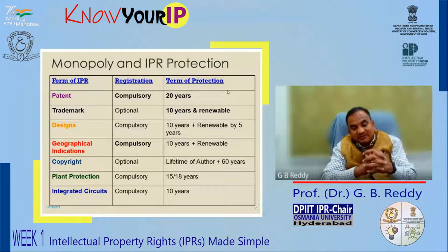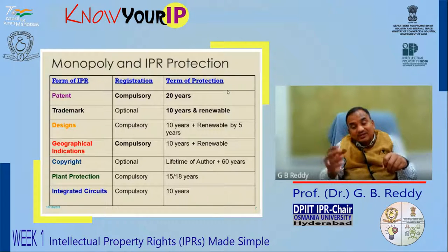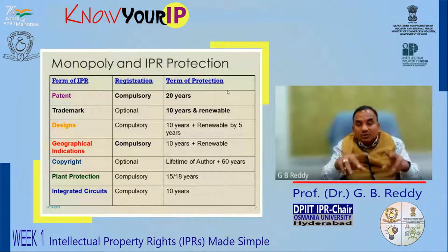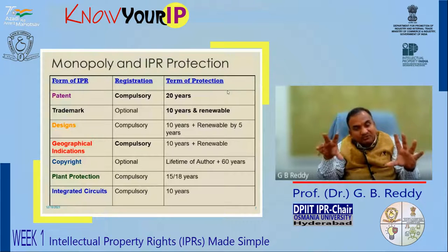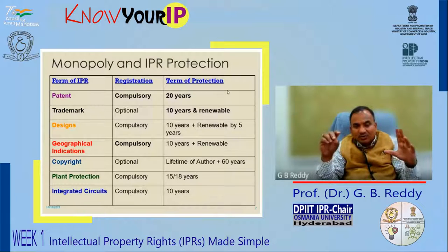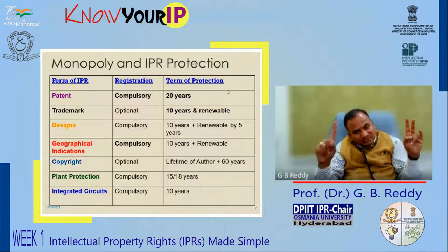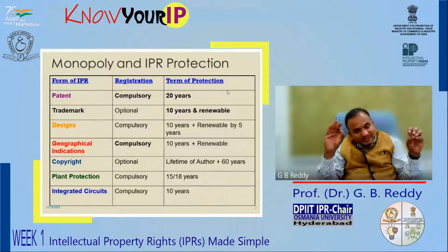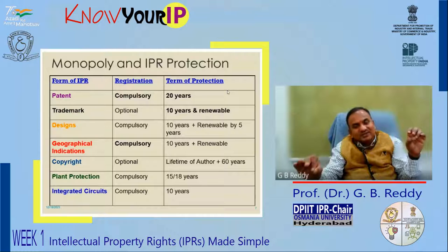Integrated circuits are also equally important. The chips — I have shown the picture of a cell phone — you come across a chip having an integrated circuit design, which is intellectual property. It can be protected for 10 years and must be registered. This covers seven main forms of intellectual property rights. Only trademark registration and copyright registration are optional, while patents, industrial designs, GIs, plant varieties, and integrated circuits must be registered.